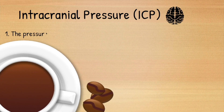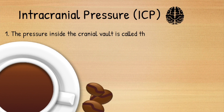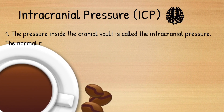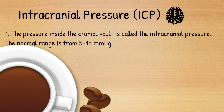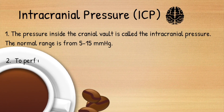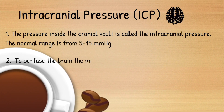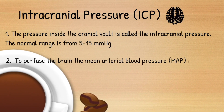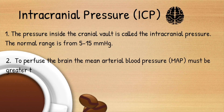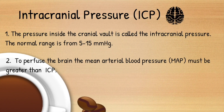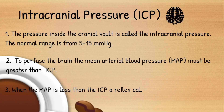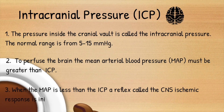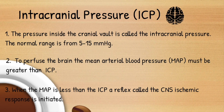The pressure inside the cranial vault is called the intracranial pressure. The normal range for this is between 5 and 15 millimeters of mercury. To adequately perfuse the brain, the mean arterial pressure must be greater than the intracranial pressure. When the mean arterial pressure is less than that of the intracranial pressure, a reflex called the central nervous system ischemic response is initiated.